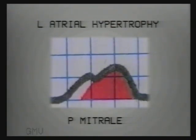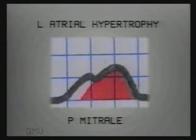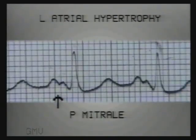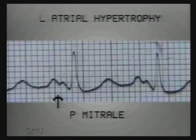In left atrial hypertrophy, the second component is delayed and prominent, giving a wide and notched P wave wider than 2.5 small squares. Since this is common in mitral valve diseases, it is termed P mitrale. Note the P mitrale: notched and 3.5 small squares wide — width more than 2.5 squares is the main criterion.